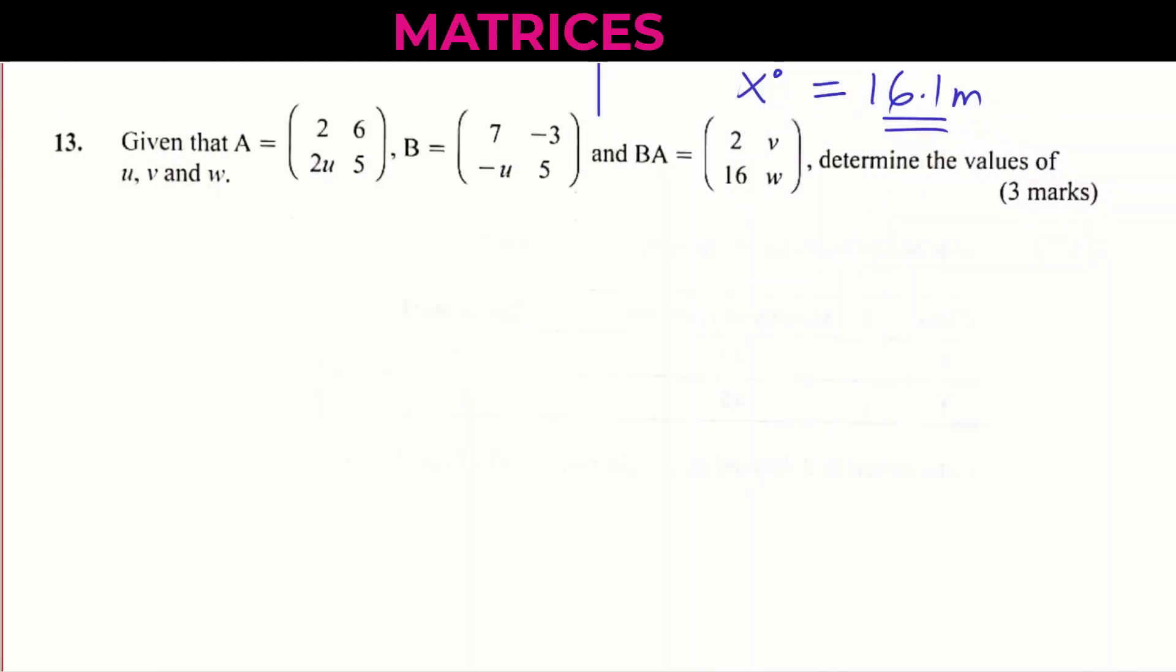Question number 13. Given the matrix A there, 2 6 2U 5, B 7 -U -3 5, and BA is given, determine the values of U, V and W.